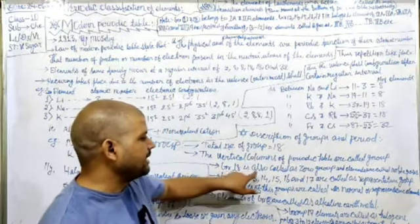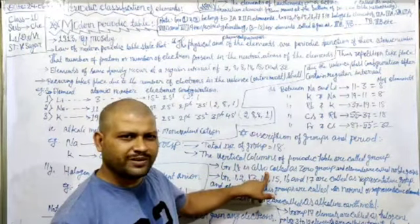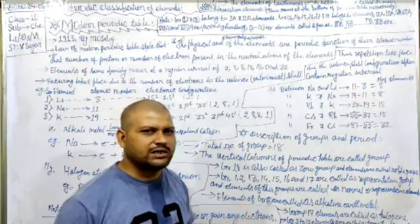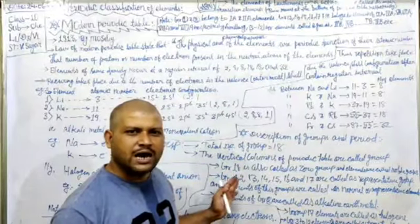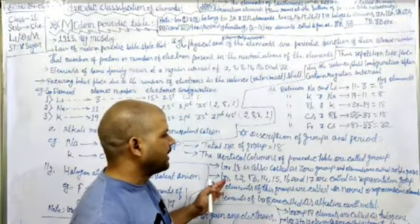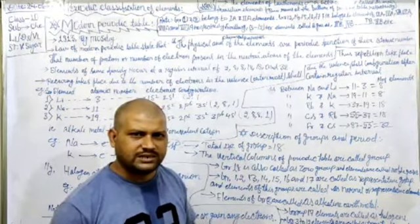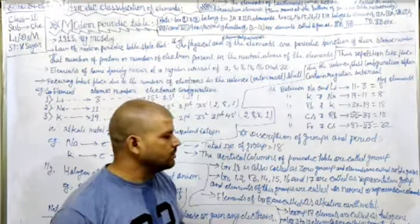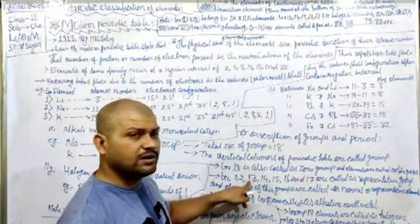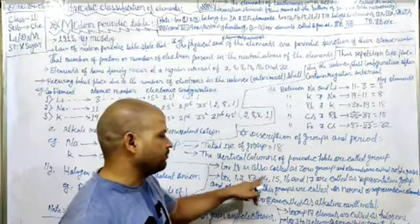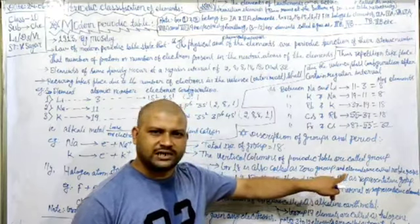Group 18 is also called the zero group because the elements belonging to it have no tendency to lose or gain electrons — they are called noble gases. Groups 1, 2, 13, 14, 15, 16, and 17 are called representative elements or normal elements. Elements of group 2 are called alkaline earth metals, and elements of group 1 are called alkali metals.